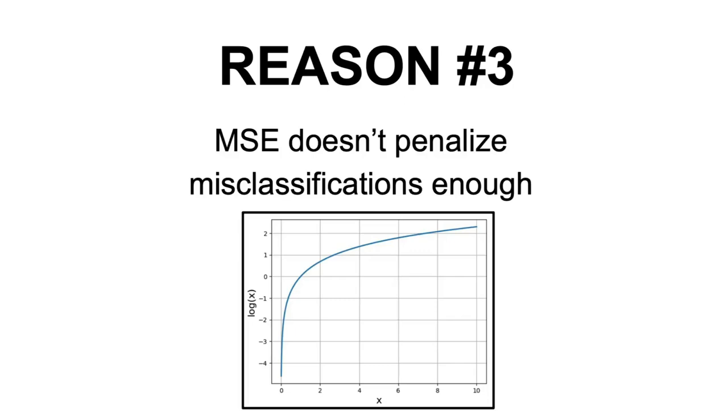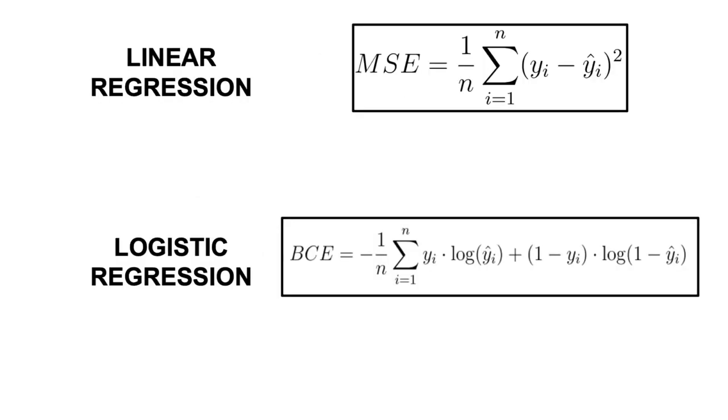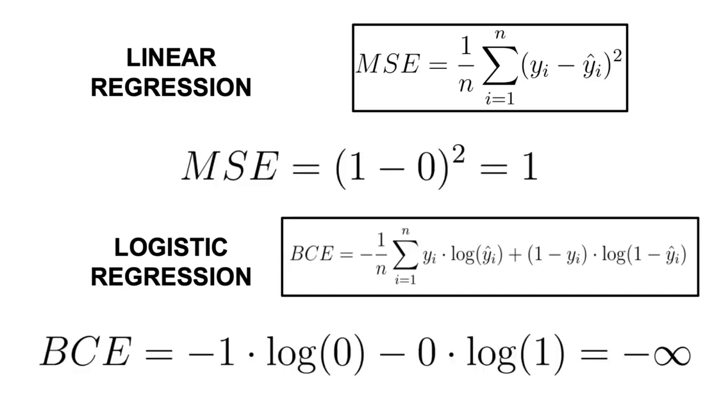The third and final argument is that the MSE loss does not penalize misclassifications enough. For instance, if we have a perfect mismatch in our predictions, meaning that our model predicted a positive label with 100% confidence when the actual label was negative, the MSE loss would be equal to 1, while the binary cross-entropy would be equal to -log(0), which tends to infinity. Thus, when using gradient descent to fit our model, this translates to a steeper gradient and a faster correction of the weights that lead to that error.